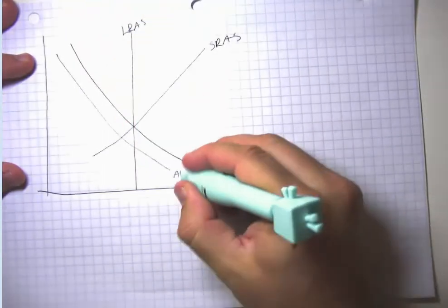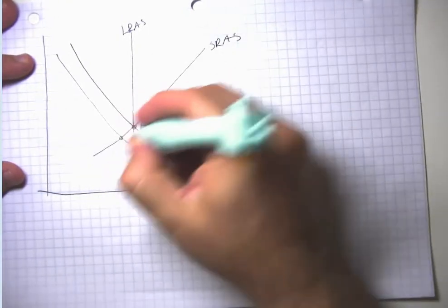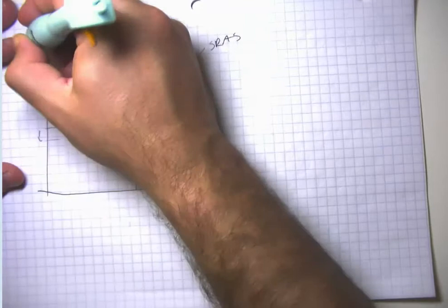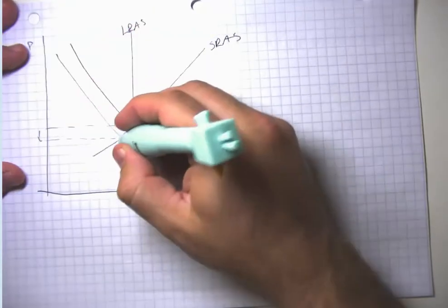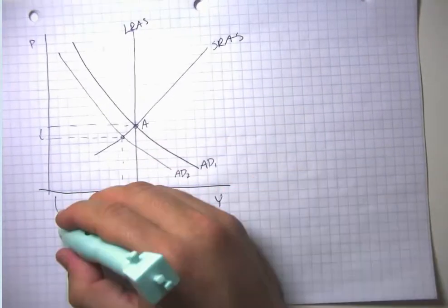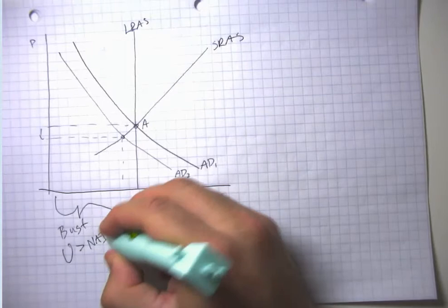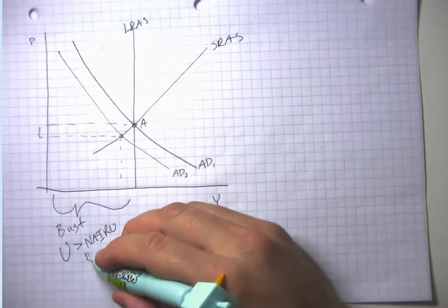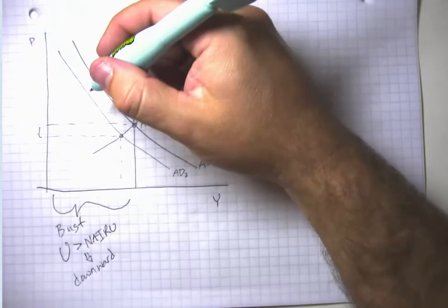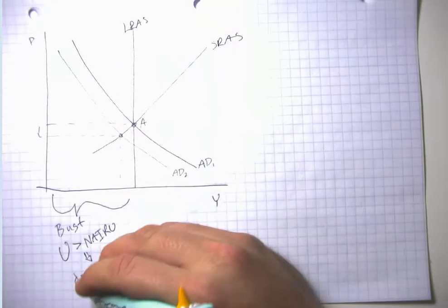Let's go back to the idea of a demand shortfall recession. We start at a point like A, there's a fall in aggregate demand, people get laid off, prices are down, GDP is down, and things are bad. Over here we have our bust, and unemployment is greater than the NAIRU. When unemployment is greater than the NAIRU, that tends to put downward pressure on wages — people don't have a lot of bargaining power and will take jobs at lower wages than they otherwise would.